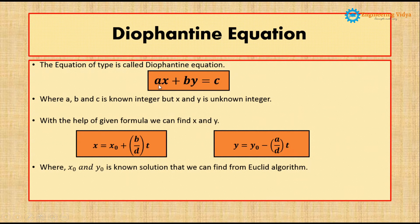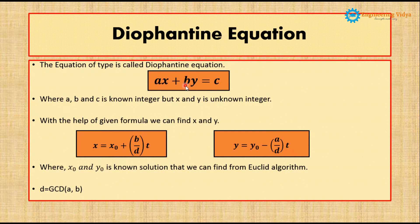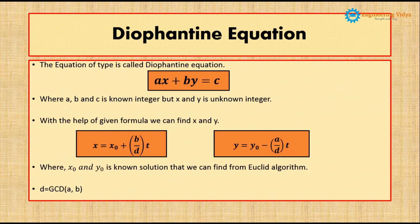This b is the same as in ax + by = c, and this is a. Now d is nothing but the GCD of a and b. From the Diophantine equation, a and b are already given, so we will find the GCD of a and b, and that will be considered as d.